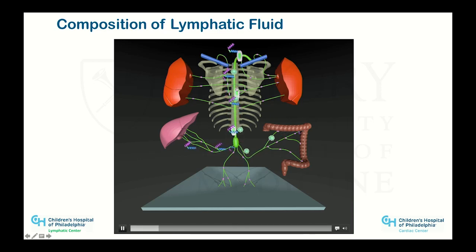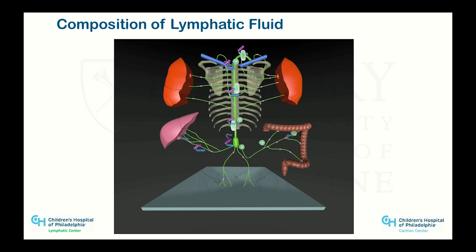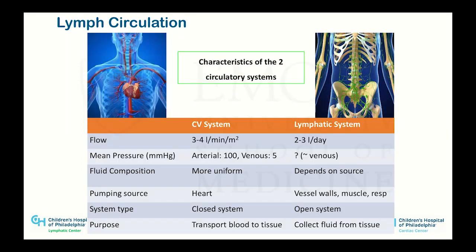The liver releases a lot of protein, and many inflammatory cells run through this system — all the T cells come from here. The lymph system physiology is very different from the cardiovascular system. The cardiovascular side flows about three to four liters per minute per meter squared, while the lymph system in normal people moves about two to three liters a day through the thoracic duct, with about eight liters a day total — much of it not going through the central thoracic duct.